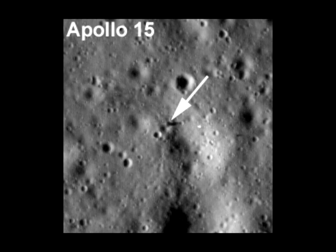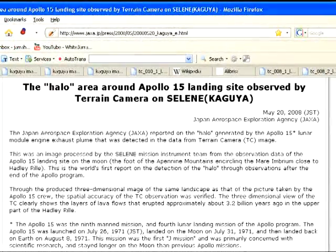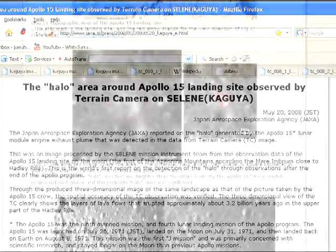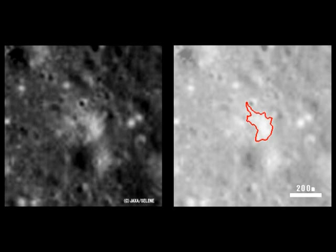For further proof, we also decided to compare these new LRO photos with the photos released by JAXA, the Japanese space agency. The Japanese claim that their Selene spacecraft also discovered evidence of disturbance left by Apollo 15's descent plume. They hyped that this bright halo was the disturbance in question. JAXA released two images of the same location. If this halo was caused by the engine plume spreading out across the dust, Falcon's descent stage should be located somewhere within this halo.